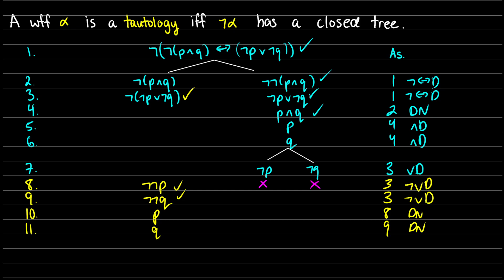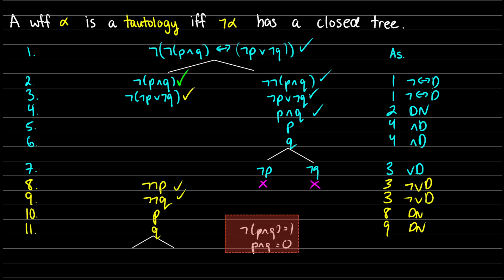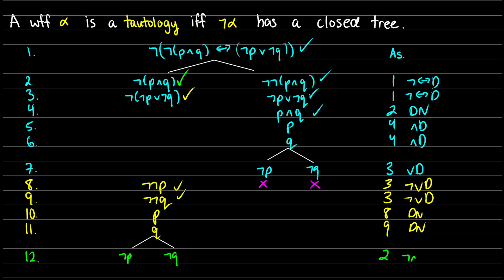There's only one more thing left to do in our tree: decompose 'not-p and q'. This is going to give us two branching paths. On one side we get not-p is true, and on the other not-q is true. From that reasoning, we know 'not-(p and q)' is true when p and q is false, meaning either p is false or q is false — so not-p or not-q. That gives us not-p on the left, not-q on the right. This is line 12, justified from line 2, not-and decomposition.